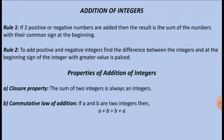Rule number 2: to add positive and negative integers, find the difference between these integers and place the sign of the integer with the greater value at the beginning. Before going to the exercise, we must know the properties of addition of integers. Closure property: the sum of two integers is always an integer. Commutative law: if a and b are two integers, then a plus b equals b plus a.